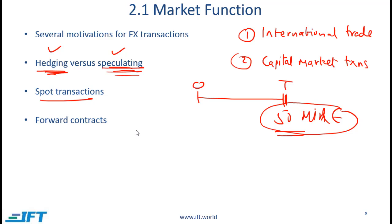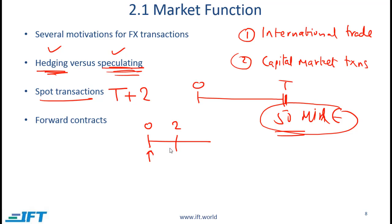Spot transactions are transactions that happen today. The term used is often T+2, meaning an agreement is made today to buy or sell a currency and settlement happens two days later. For some currencies such as the US dollar, settlement might be T+1, meaning the agreement happens today and settlement happens one day later.